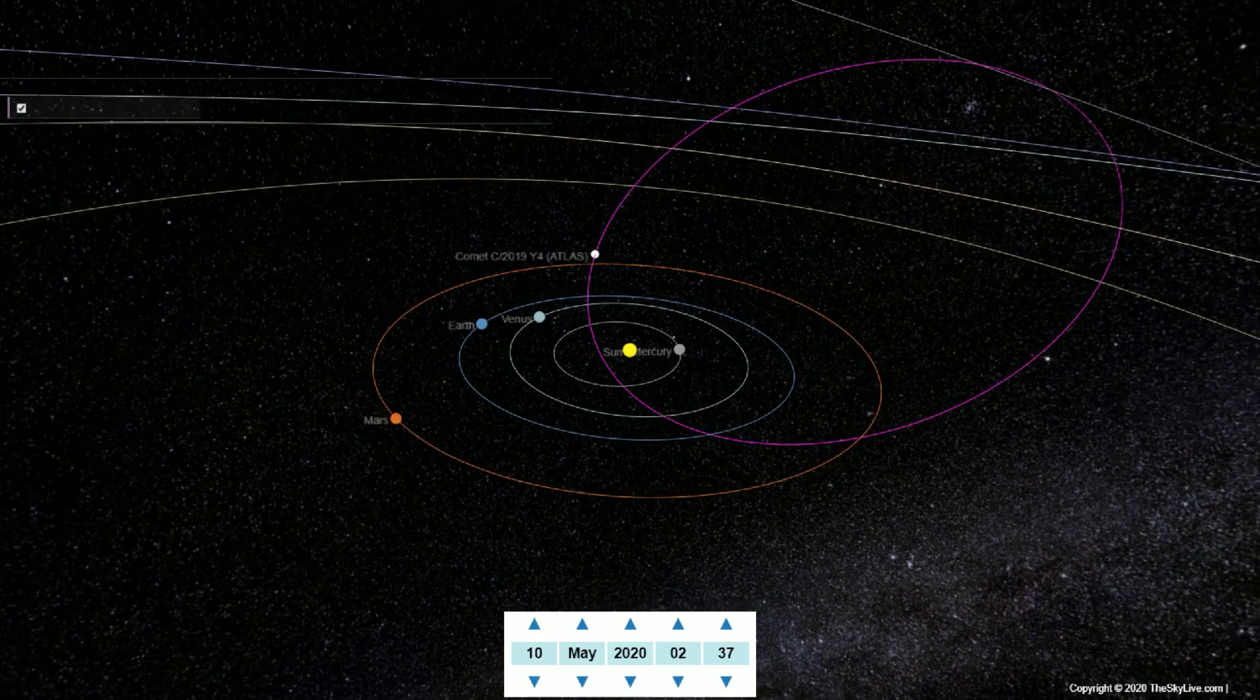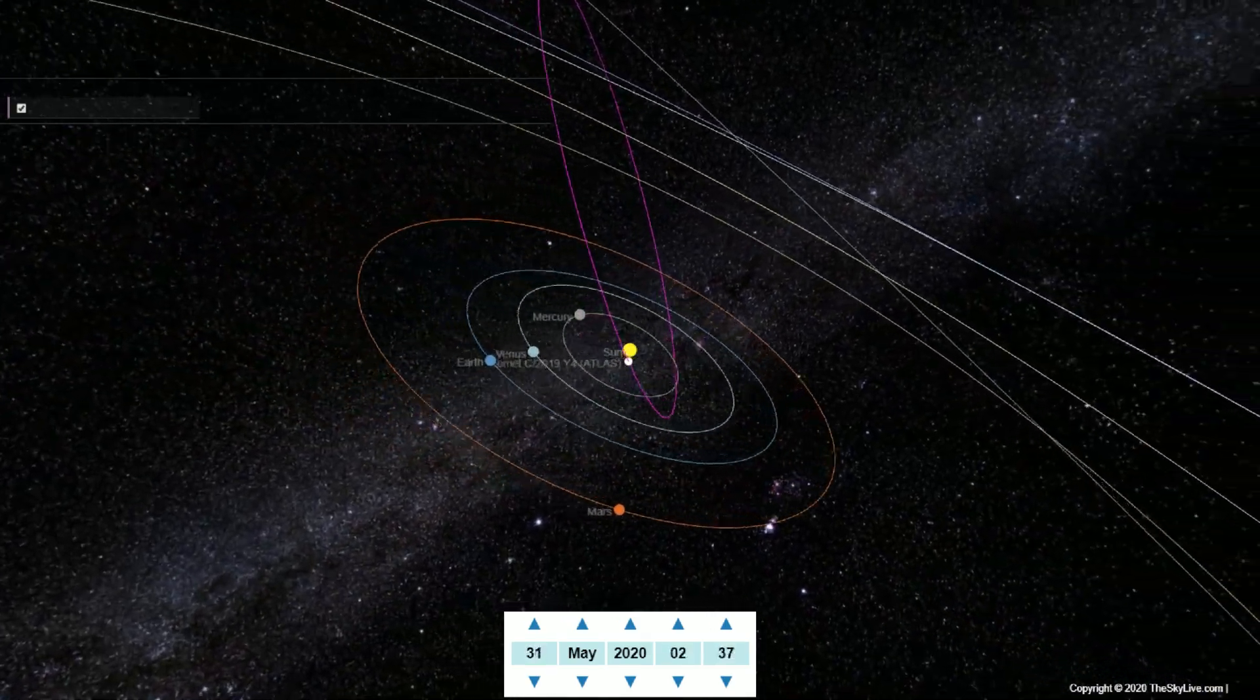C-2019 Y-4 was nearly three astronomical units from the Sun.